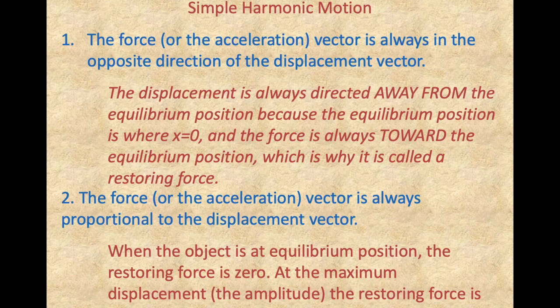The second condition to identify a motion as simple harmonic is that the force or acceleration vector is always proportional to the displacement vector. We saw this in Hooke's Law: F equals negative kx, where k is a constant and the negative sign indicates direction. From Newton's second law, F equals ma, so acceleration is also directly proportional to x — the displacement from equilibrium. When x is zero at the equilibrium position, the force and acceleration are also zero.